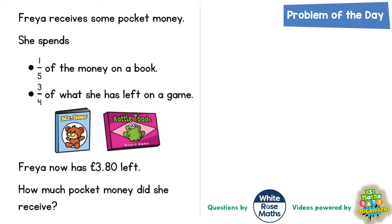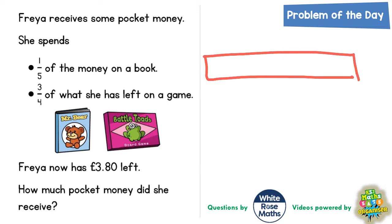A bar model makes it a lot clearer what is actually going on. So straight away let's start with a bar model. It says she spends one fifth of the money on a book, so after she's received this pocket money she spends a fifth of the money on a book. The most sensible thing to do is to start by drawing a bar with five pieces because it talks about fifths.